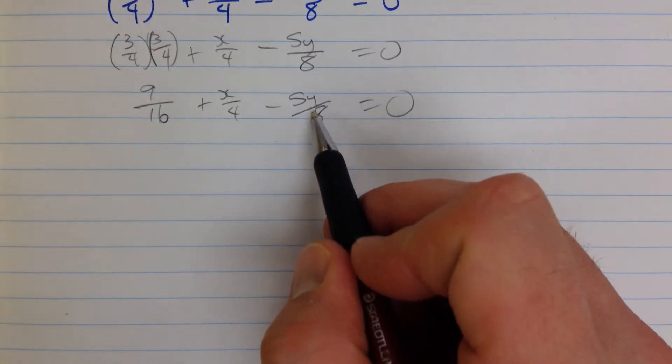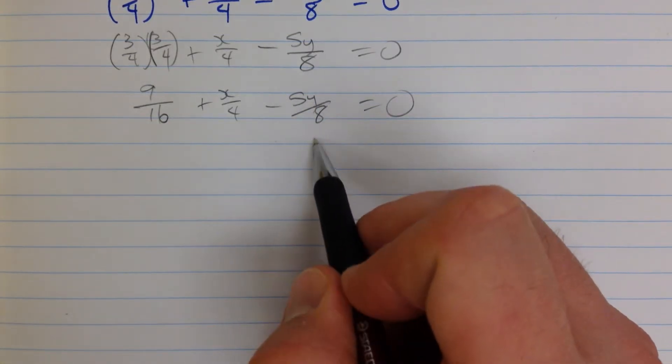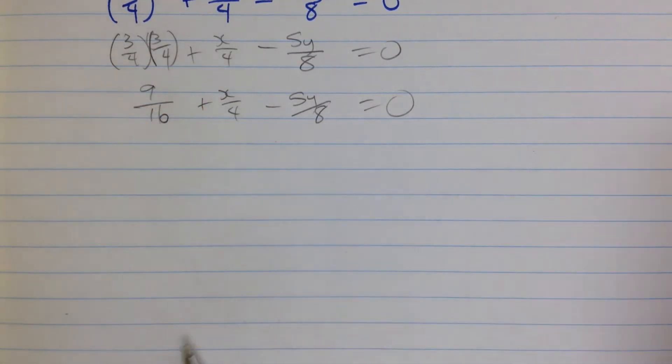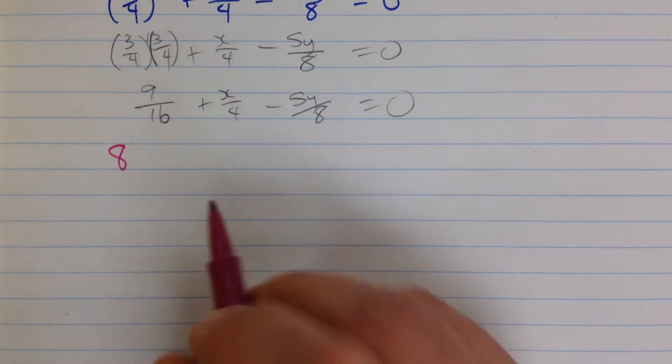Well, we are trying to get y by itself. It has a negative 5 eighths attached to it. Let's get rid of the 8 first. To do that we multiply both sides of the equation by 8.